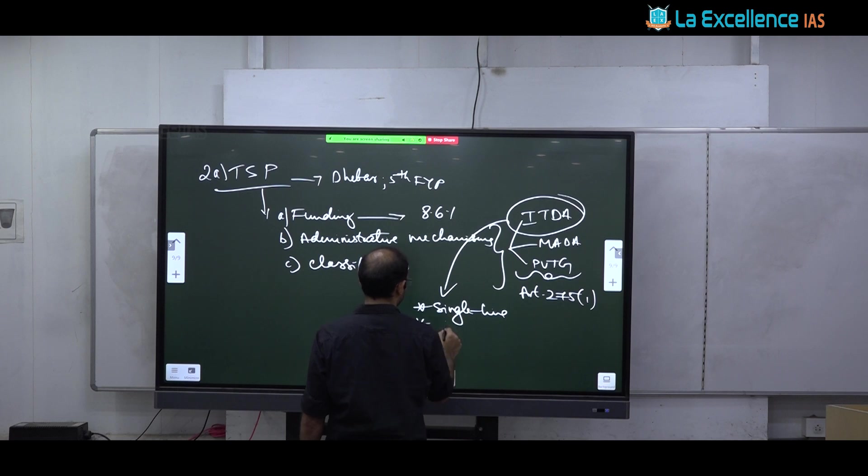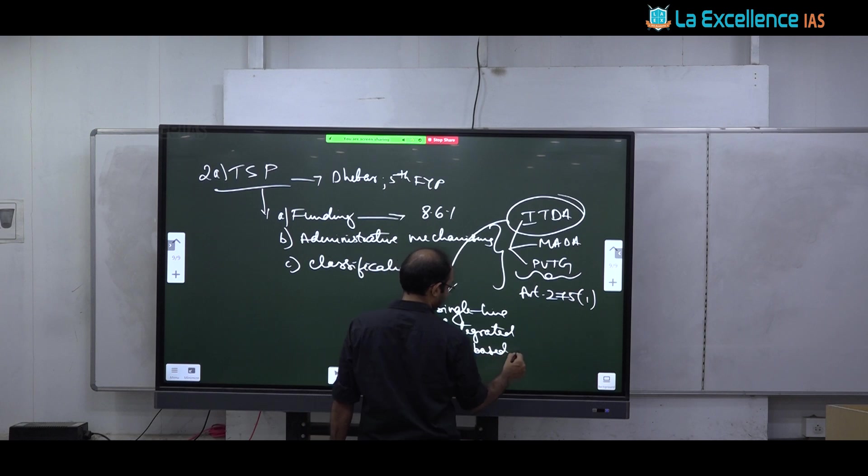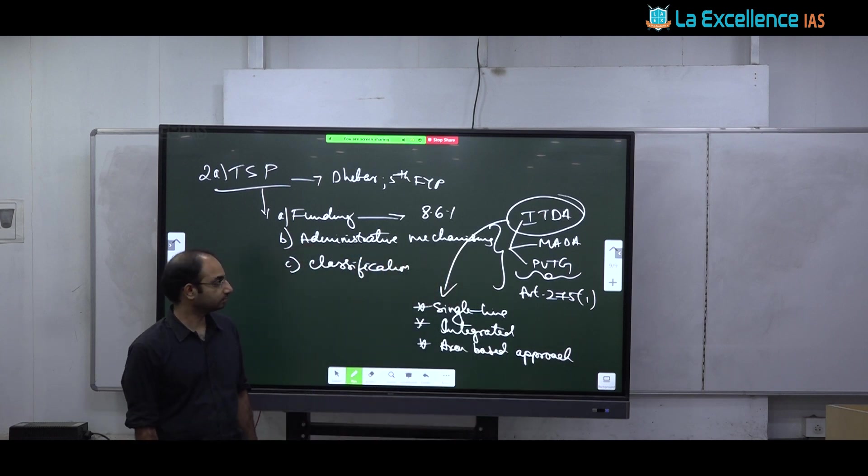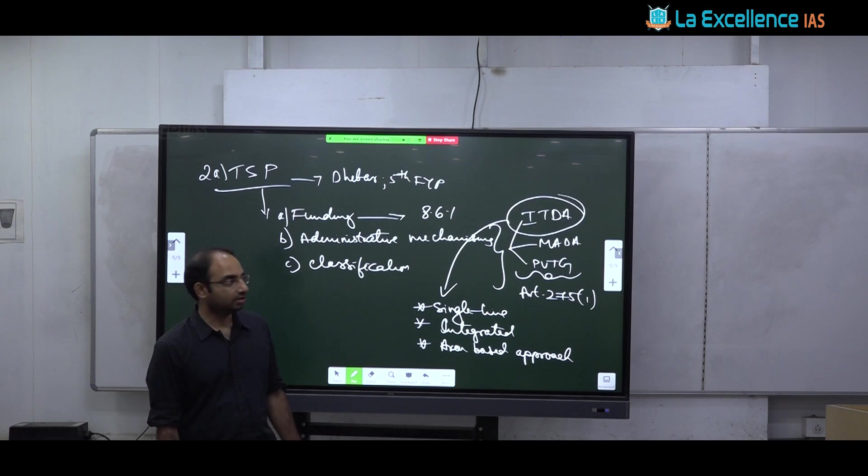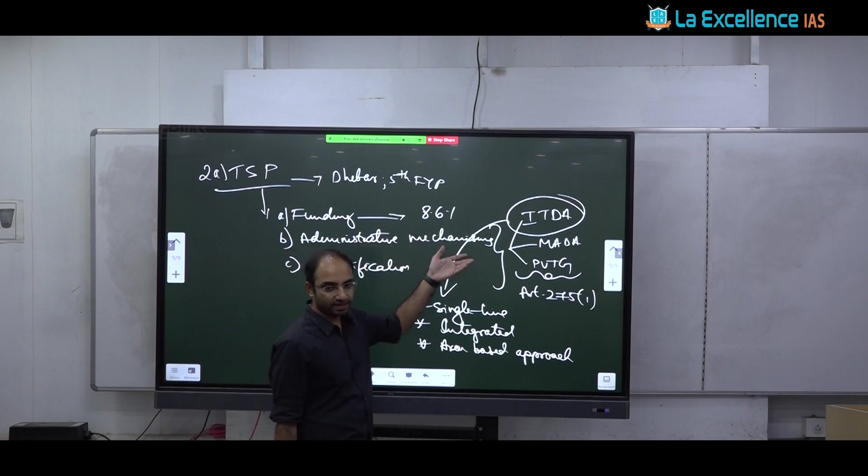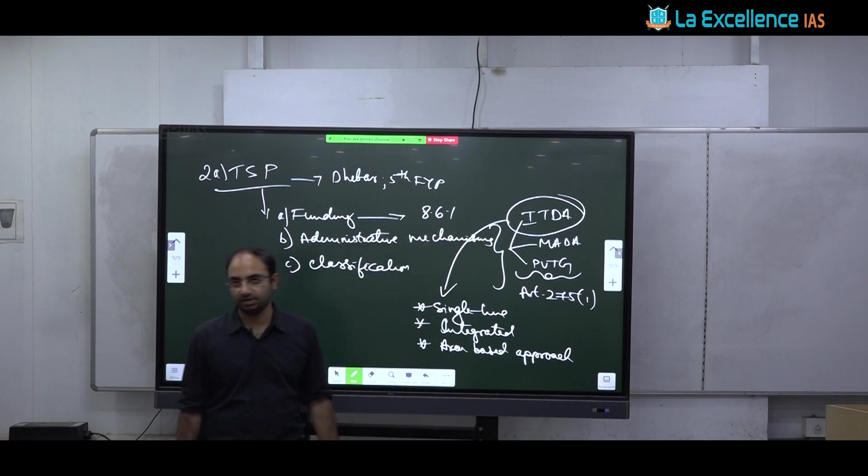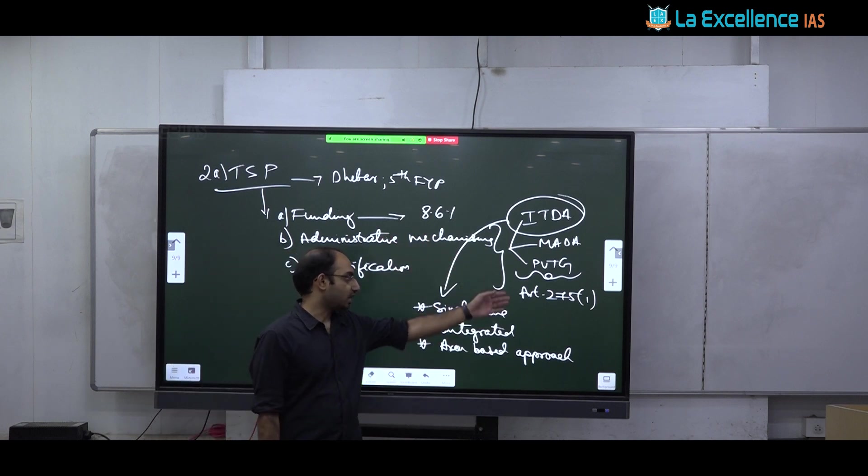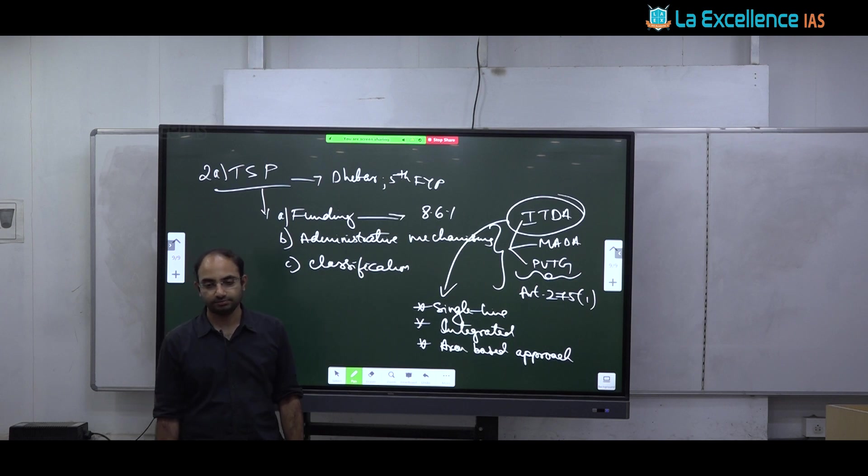And tribal sub plan basically involves A some funding arrangements, B it also involves certain administrative mechanisms and C classification of tribes into areas broadly. Funding means tribes all departments must allot something like 8.6 percentage of funds for tribal issues. In terms of administration behold all tribal areas have been divided into ITDA areas, MADA pockets and you also have PVTG pockets. And in these areas there is special central assistance as part of article 275.1 that is sub plan.